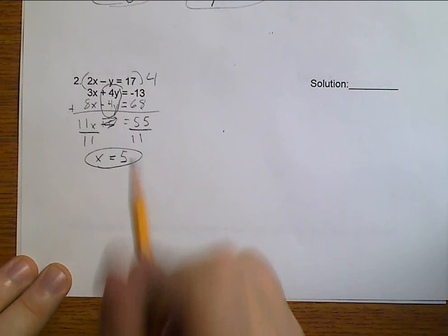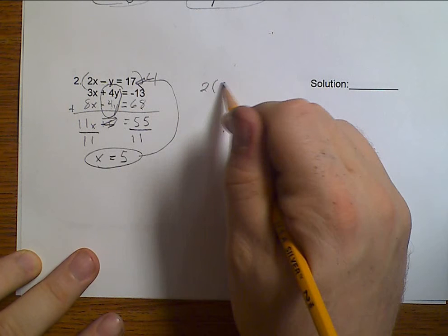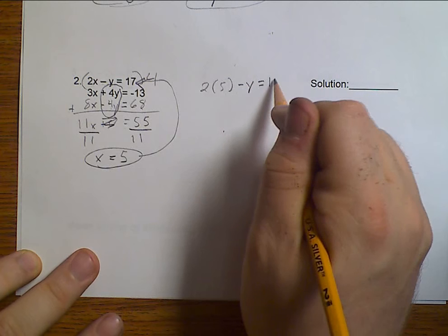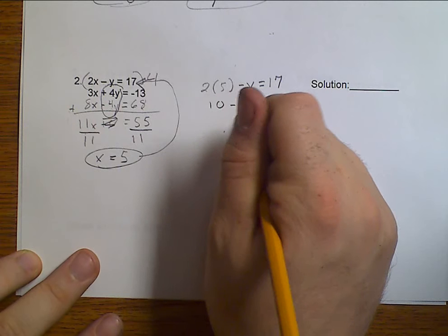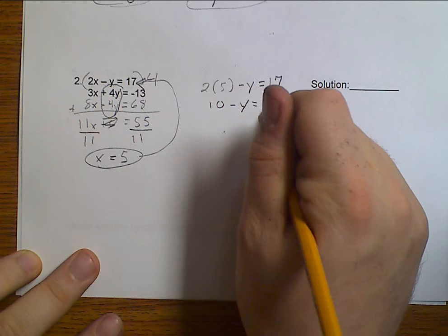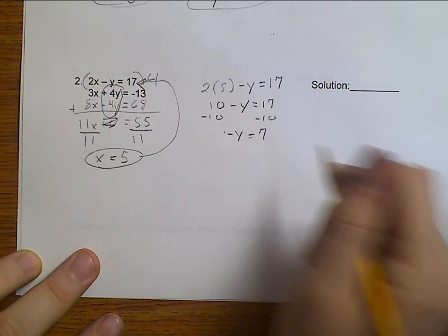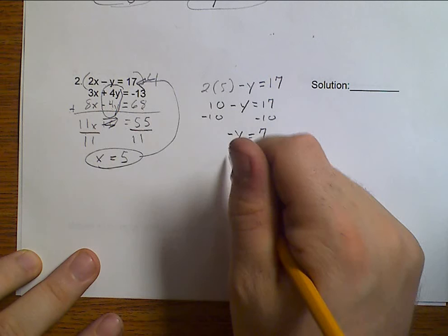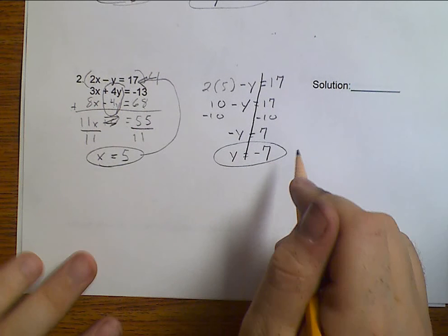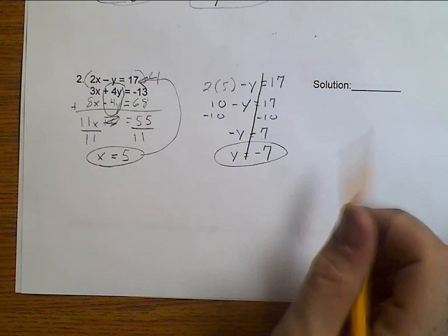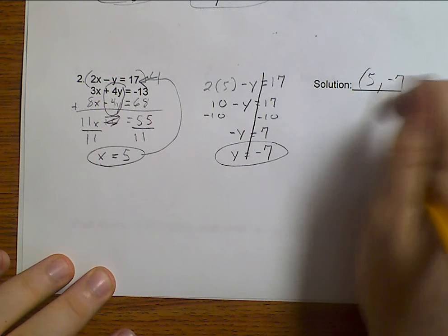Then, you take this and plug it into one of my two equations. So, 2 times 5 minus Y equals 17, which is 10 minus Y is 17. If I subtract 10, I get that negative Y equals a positive 7, which means that positive Y equals negative 7. So, I solved X was 5, Y was negative 7, and I have my answer.